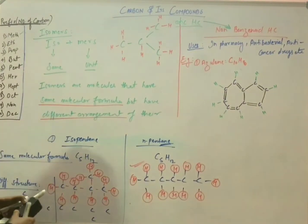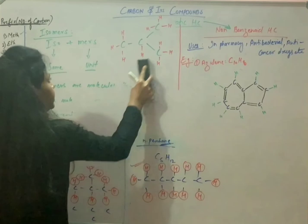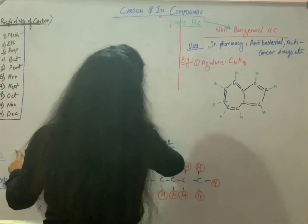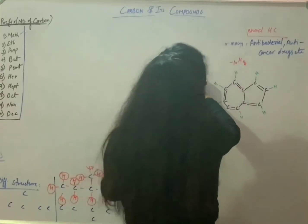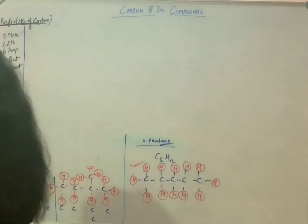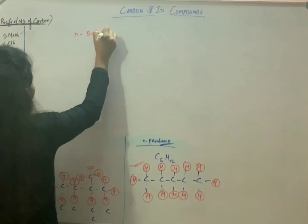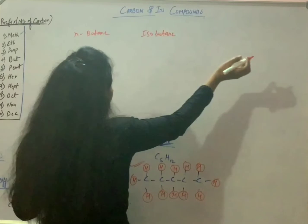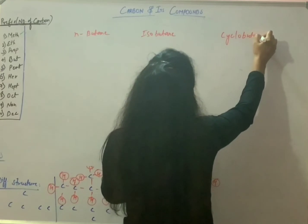To conclude today's lesson: we learned three types of structures. The first one is the normal one, the next one is the cyclo one, and the last one is the iso one. So we can conclude with normal butane, isobutane, and cyclobutane as examples.